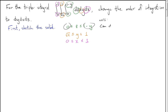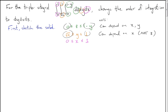Just to note: the upper and lower bounds on the first variable we integrate — z — can depend on x and y. The bounds on the next variable, y, can depend on x but not z, since we've already integrated with respect to z. And finally, the bounds for x can't depend on any variables — they must be constants.